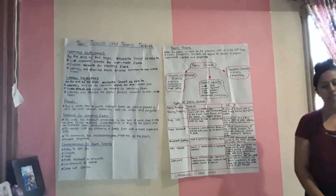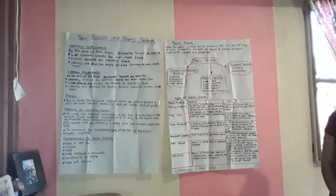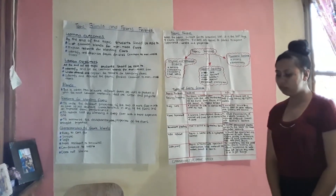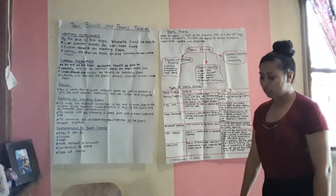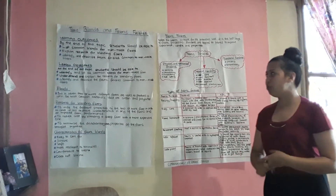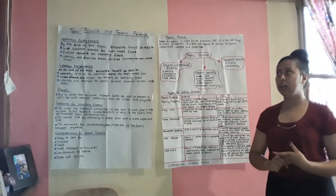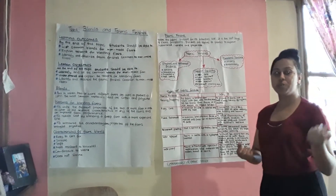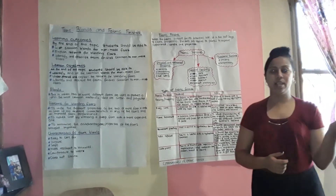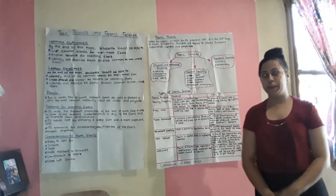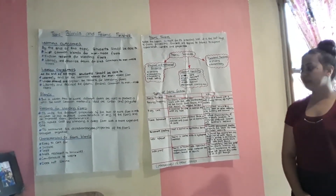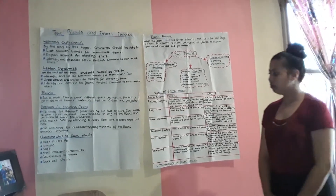Priya, what is a blend? Blends is when two or more different fibres are used to make a yarn. Sabrina, can you give me some characteristics of fabric blends — at least four? Soft, does not shrink, easy to care for, and durable.